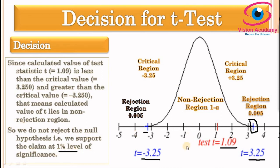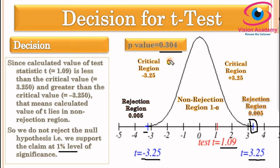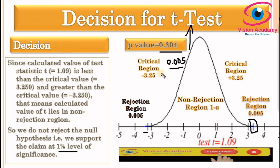We can also use the p-value to take a decision. The p-value for this problem is 0.304. Comparing with alpha = 0.005, since p-value (0.304) is greater than alpha (0.005), we do not reject the null hypothesis — we support our claim. Thank you for watching; please subscribe to my Vision Academy YouTube channel.